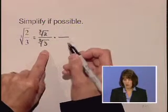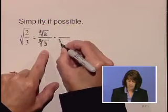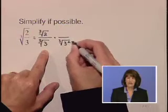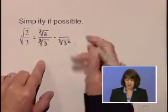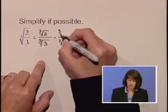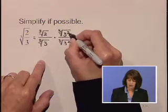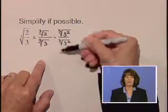We already have one three. We need two more of them to create a perfect cube value. Make sure that you do the same thing to the top and the bottom, actually multiplying here by a factor of one.